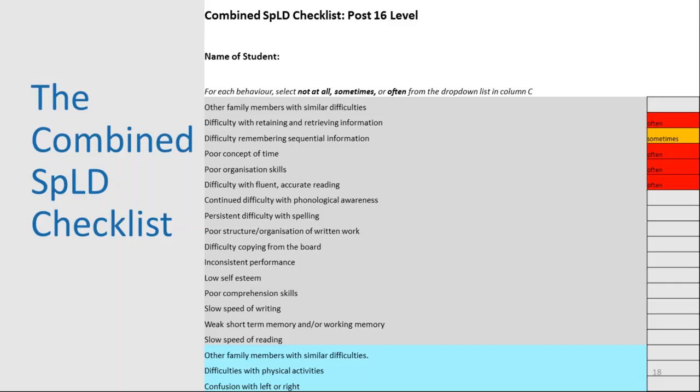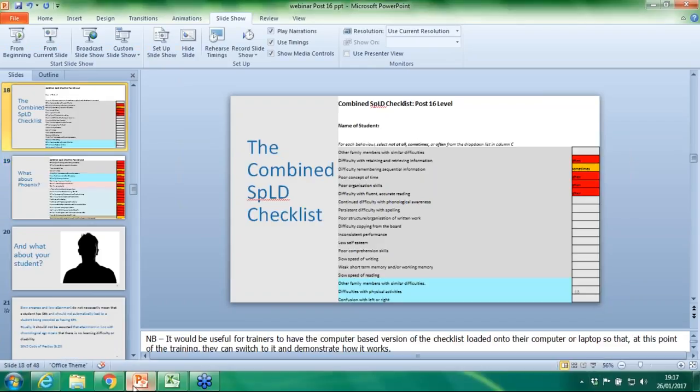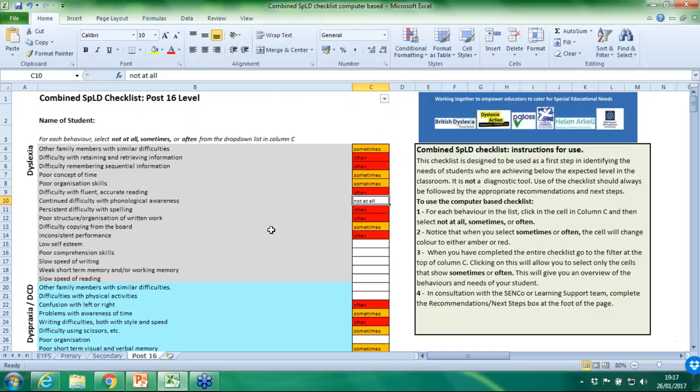This approach has the potential to result in a much more tailored approach to meeting the student's needs. When and why should you use the checklist? If you're concerned that a student is not making the expected rate of progress or is having difficulties with certain aspects of learning, the checklist is a quick, easy-to-use first step in a graduated response — that is: assess, plan, do, review. I'm now going to show you the checklist live in action so you can see how it works.